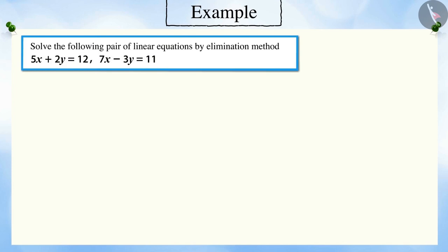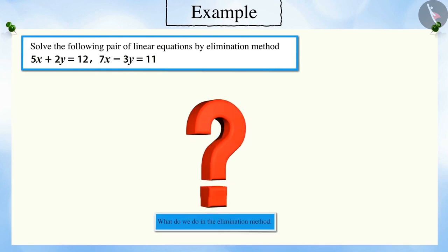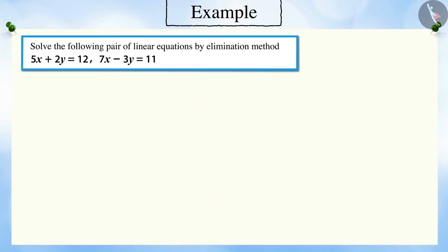Solve the following pair of linear equations by the elimination method. Can you tell what is the first step we need to follow in the elimination method? Correct. First, we'll make the coefficient of any one of the variables equal.